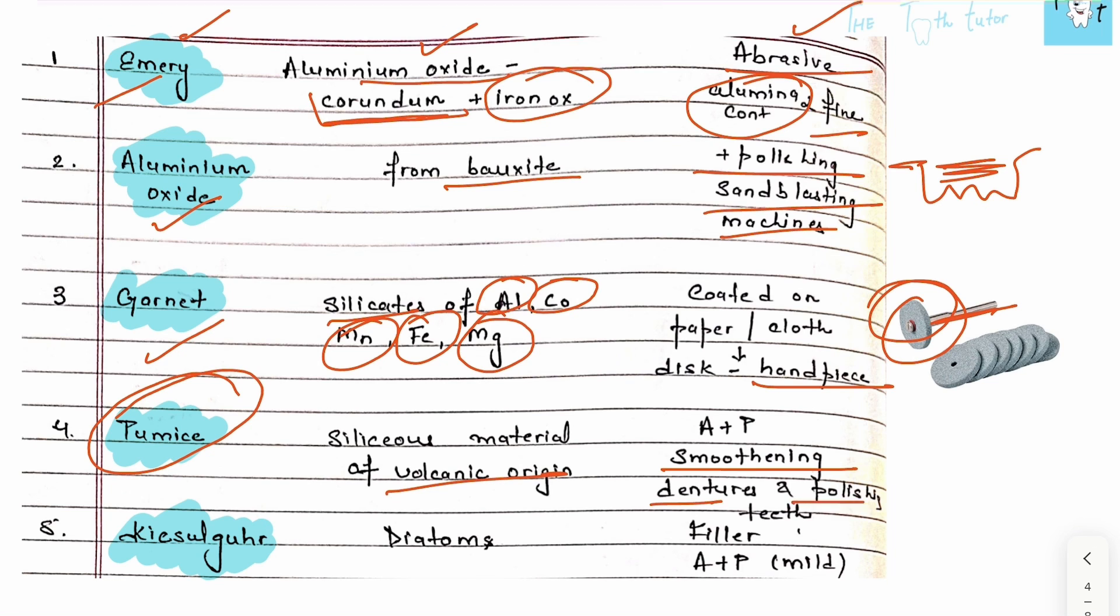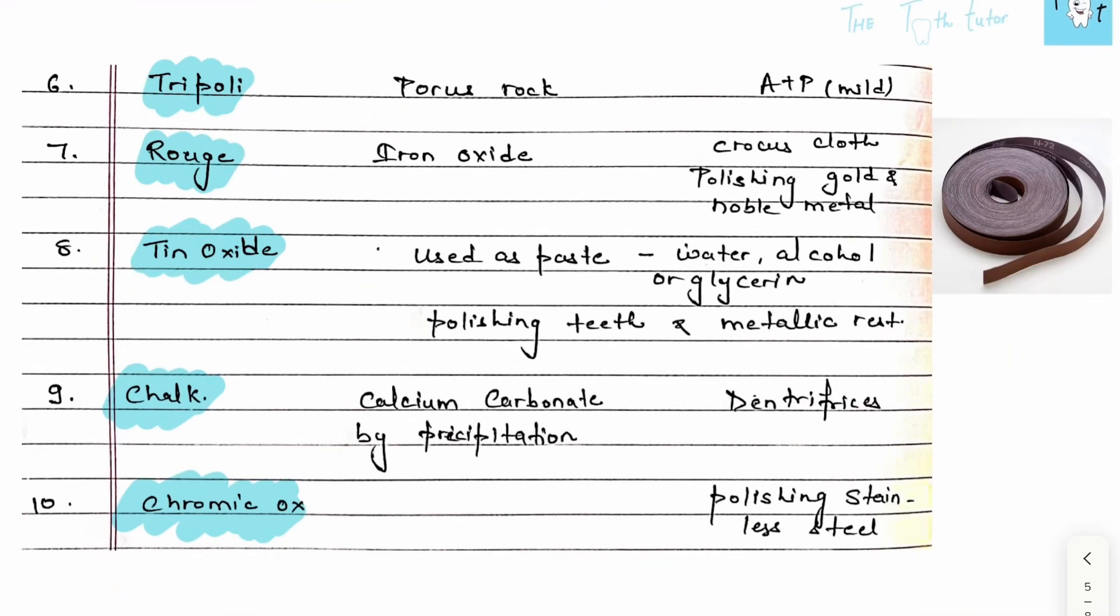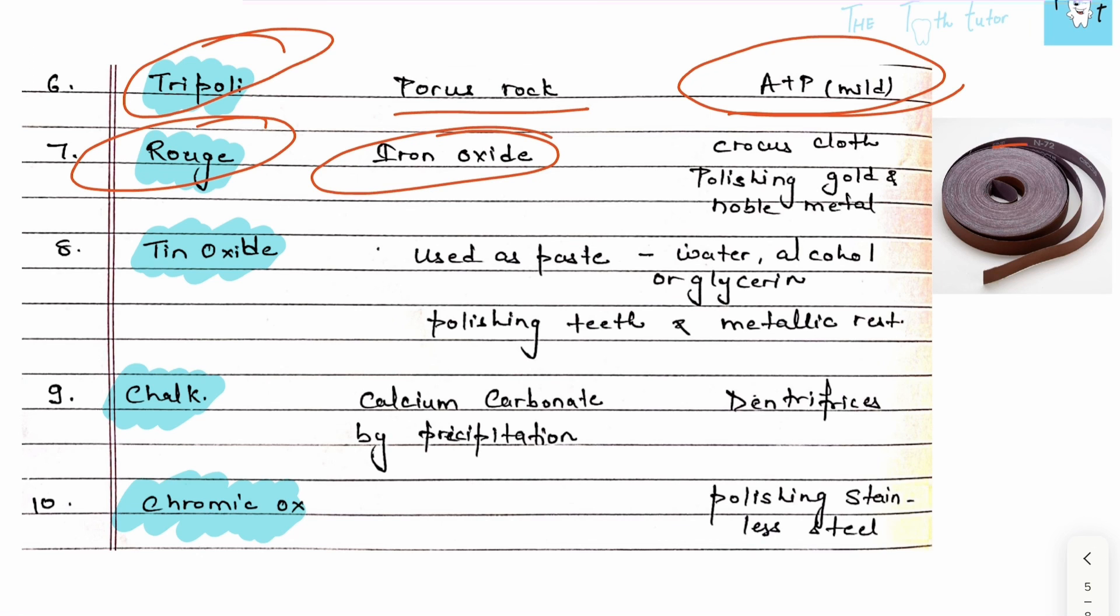We have kieselguhr, extracted from diatoms, used as a filler in many dental materials plus it's a mild abrasive and polishing agent. Then tripoli, also a porous rock similar to kieselguhr, also a mild abrasive and polishing agent. We have rouge, which is iron oxide, coated on cloth or paper called crocus cloth, used for polishing gold and noble metals.